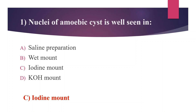Moving to other options: KOH mount is used for the rapid detection of fungal elements in clinical specimens — 10% KOH is used here. In saline wet mount, 0.85% saline is used, which is used for detection of trophozoites and cysts of protozoa, eggs and larvae of helminths. It is particularly useful for the detection of live motile trophozoites of Entamoeba histolytica, Trichomonas vaginalis, Giardia lamblia, and Balantidium coli.